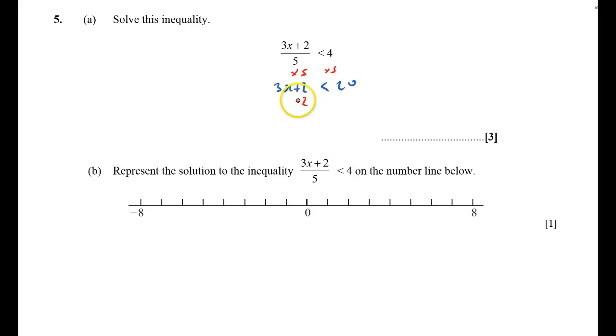Now I can get rid of the plus 2, so I subtract 2 from both sides, and that will say that 3x is less than 18. And therefore, dividing by 3, x is less than 6. That's my answer.